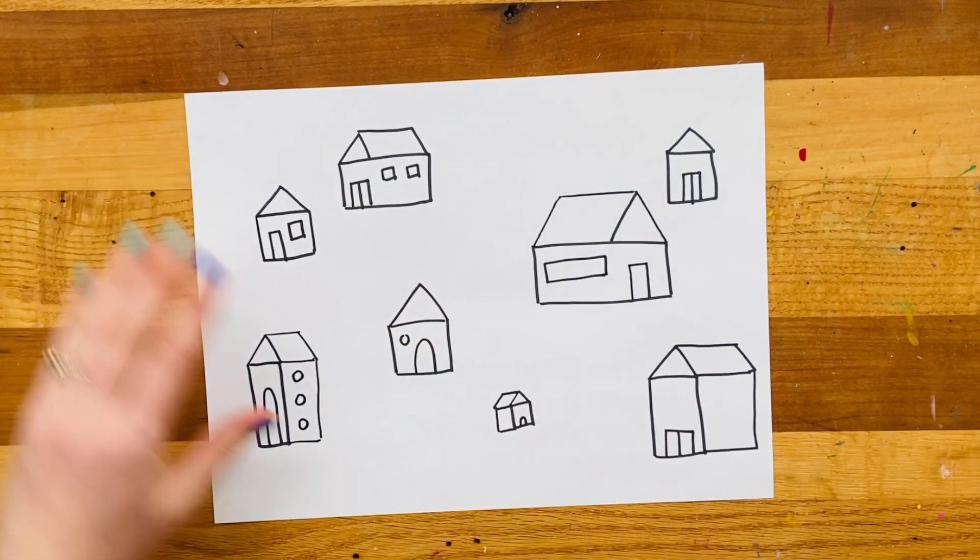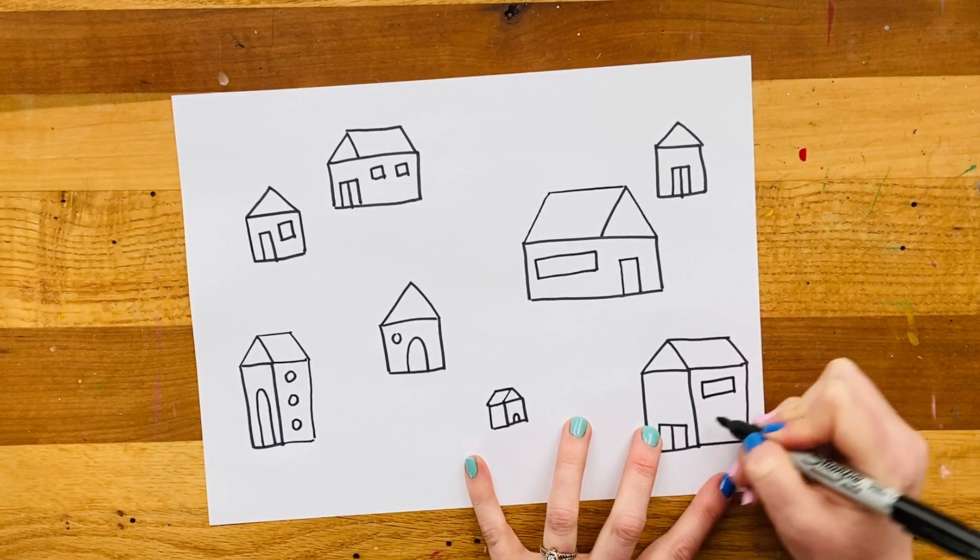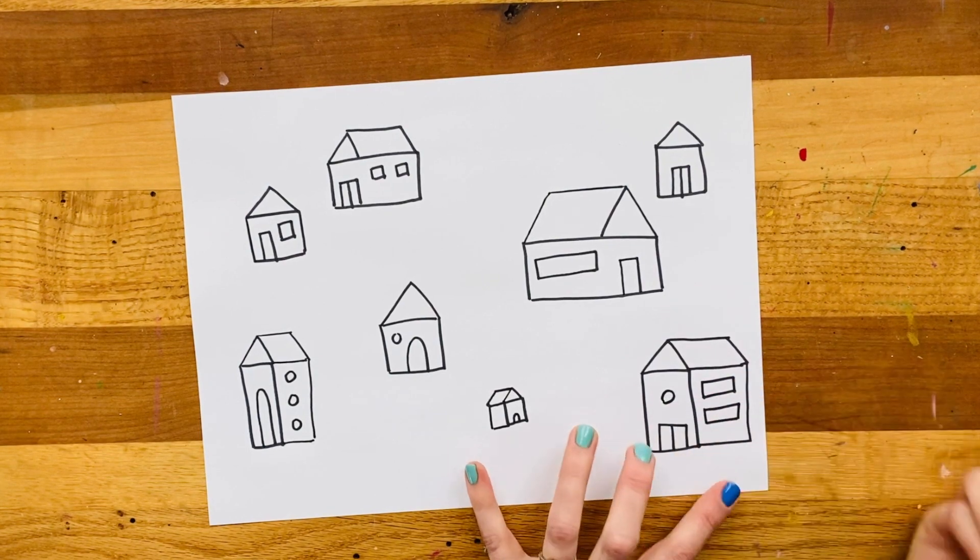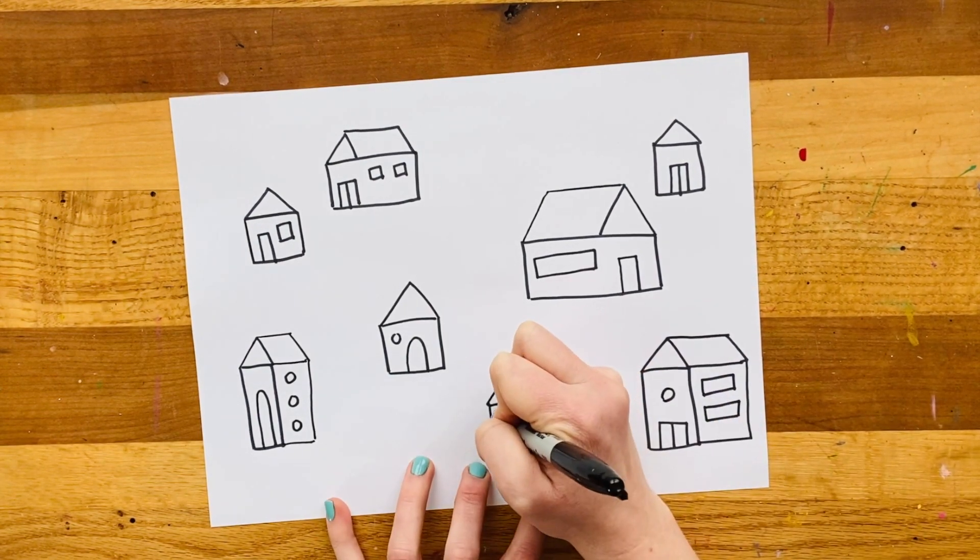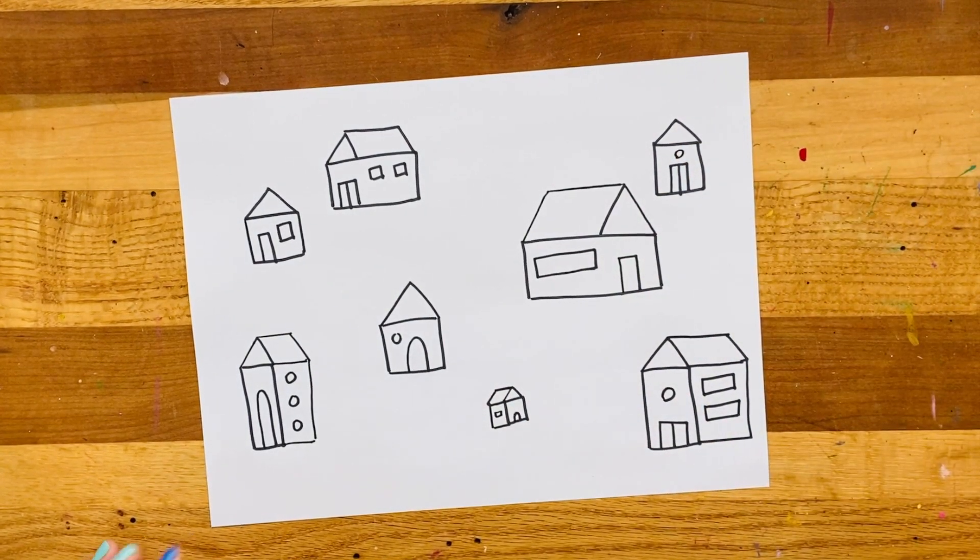This one's got three circular windows in a row. This one, I think I'm going to do two stacked rectangles and a circle above. What else needs windows? This little one needs a square. This one needs a circle above the door. And I think we're good.